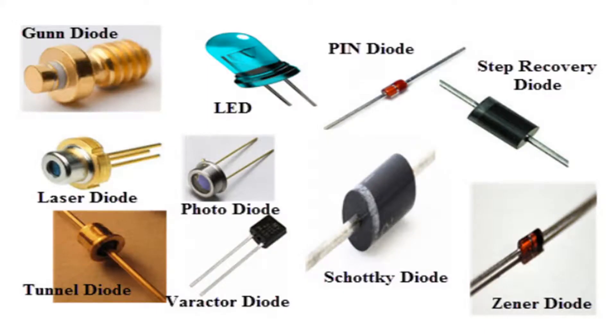The diode allows electric current to pass in one direction while blocking it in the opposite direction. The diode also takes the output signal and clips it.